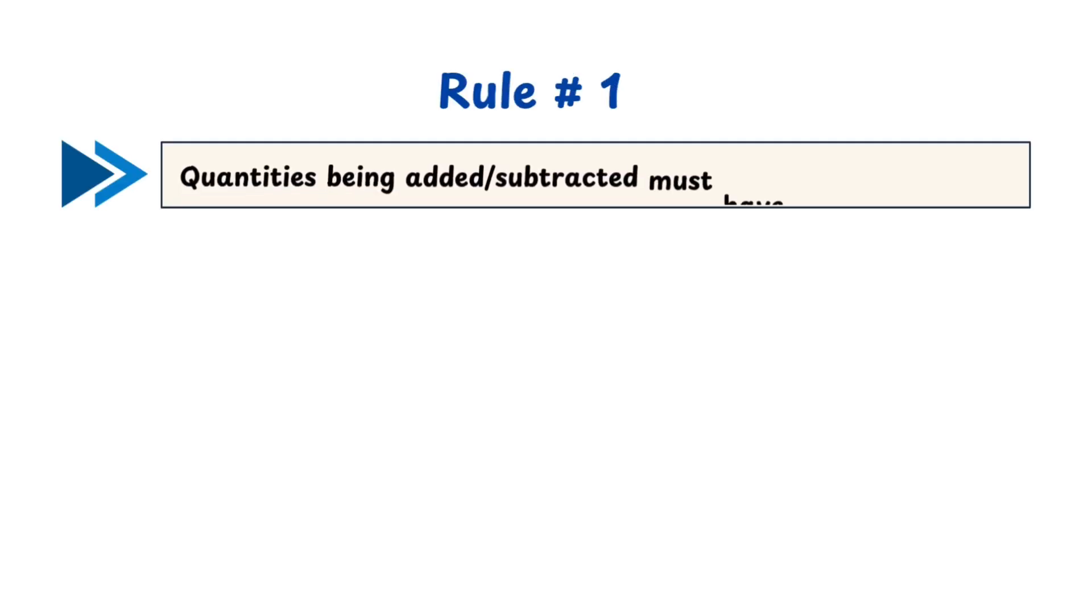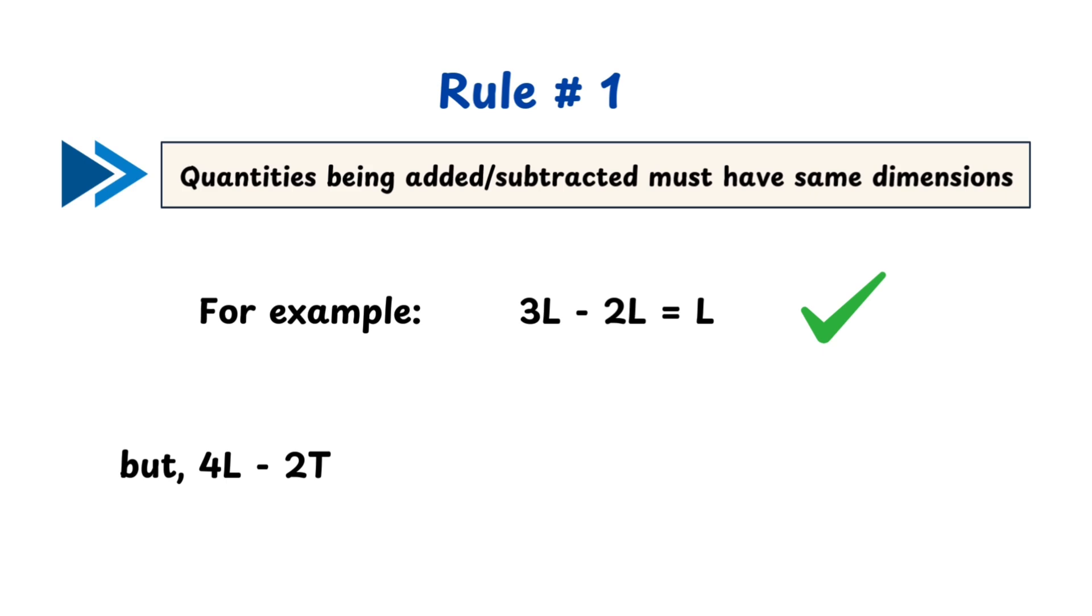One: you can only add or subtract quantities with the same dimension. For example, the operation 3L - 2L = L is allowed because both terms on the left-hand side are in dimensions of length, and so must be the resulting term on the right-hand side. But the operation 4L - 2T is not allowed because both terms are in different dimensions. That's like subtracting apples from oranges—it is not possible.